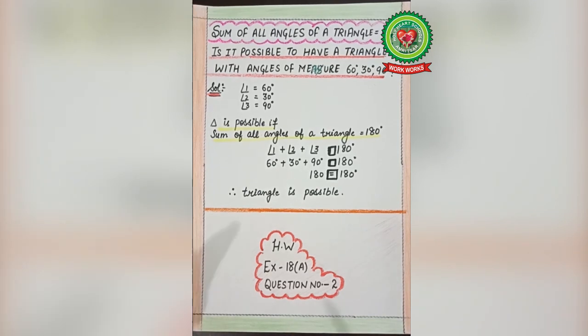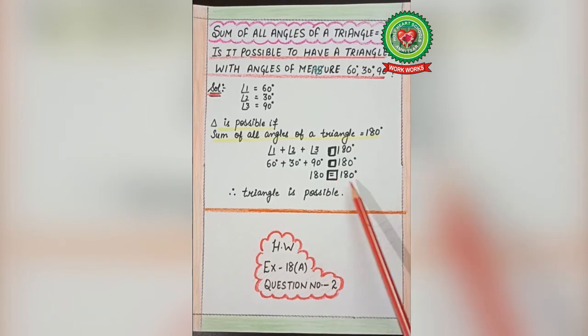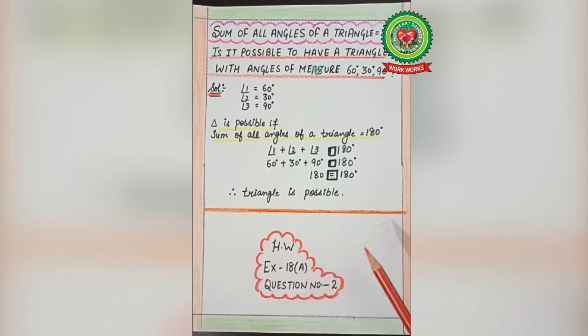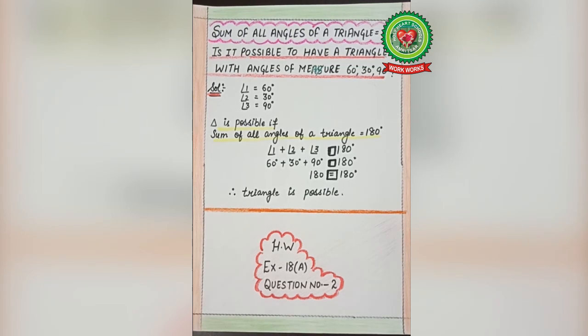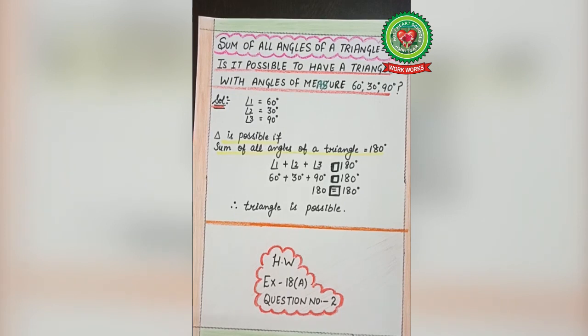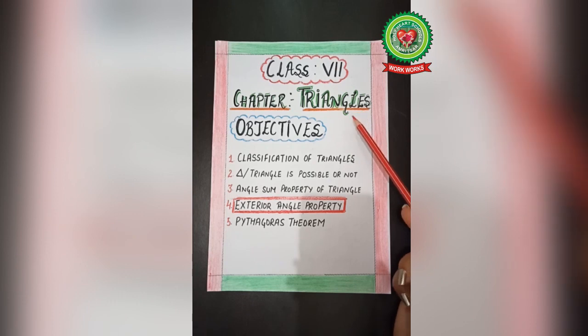In cases where different angles add up to 150°, 170°, or 190° — which is not equal to 180° — you simply write 'not equals to,' meaning those angles don't satisfy the angle sum property and the triangle will not be possible. These are the two cases. Your homework is Exercise 18A, question number 2, which contains similar simple questions on whether a triangle is possible or not.